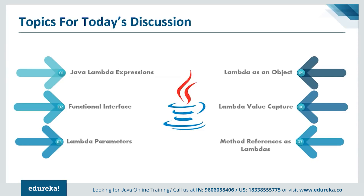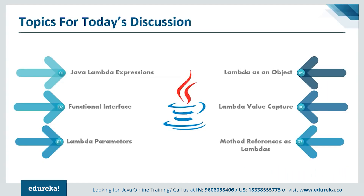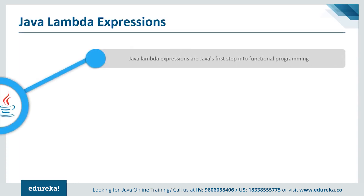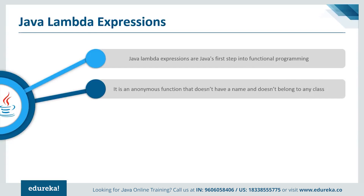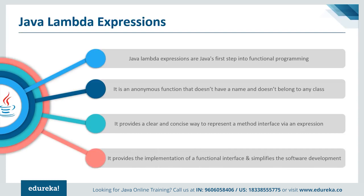Lambda expressions are a fundamental approach to functional programming in Java — this is an introduction to functional programming. Functional programming is a programming paradigm, and you can say it's the mathematical way of solving a problem. It's always based on lambda calculus. Java lambda expressions are the first step to functional programming — an anonymous function with no name that won't belong to any class.